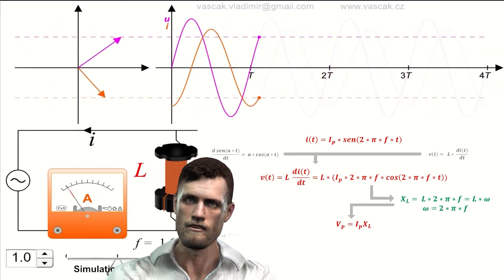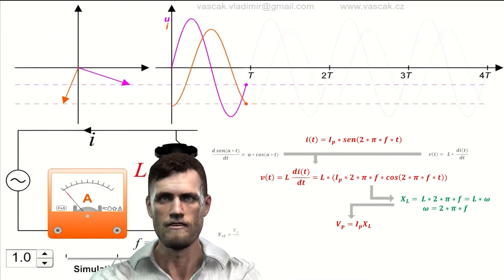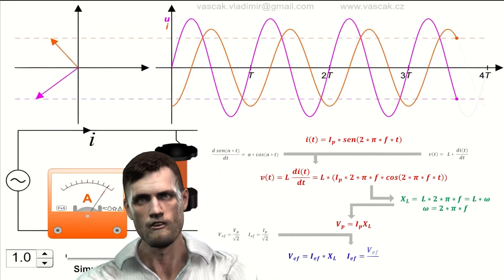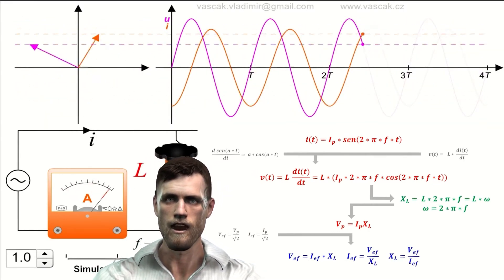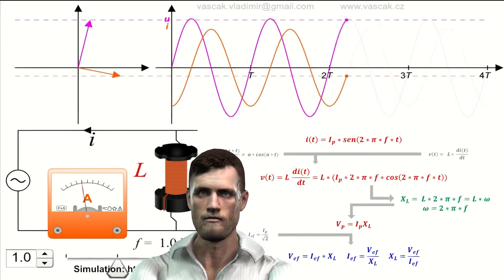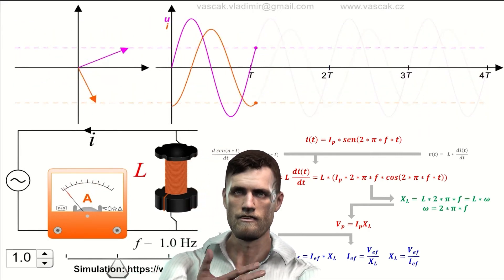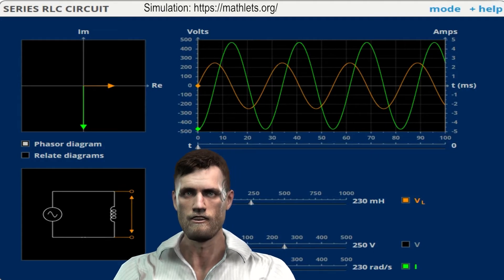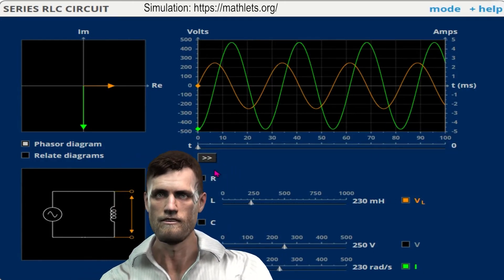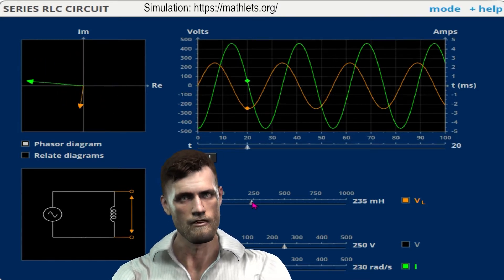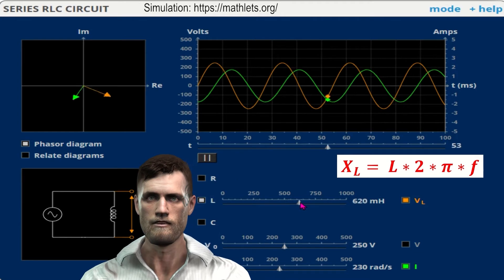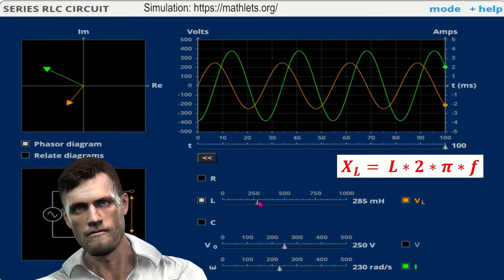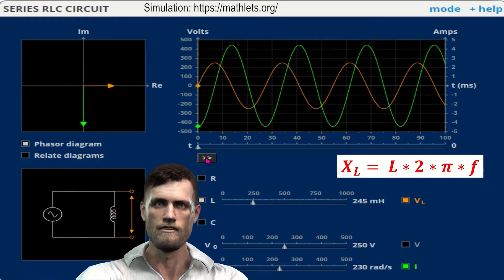Inductive reactance X_L, like resistance, is expressed in units of ohms. Considering sine waves, we can apply the relationship between peak values and effective values to obtain the relationship between the effective values of voltage and current in an inductor — similar to Ohm's law but substituting resistance with inductive reactance. The higher the inductive reactance, the lower the current flowing through the inductor. Inductive reactance increases with increasing inductance L and also increases with increasing frequency — unlike resistance, which does not depend on frequency.